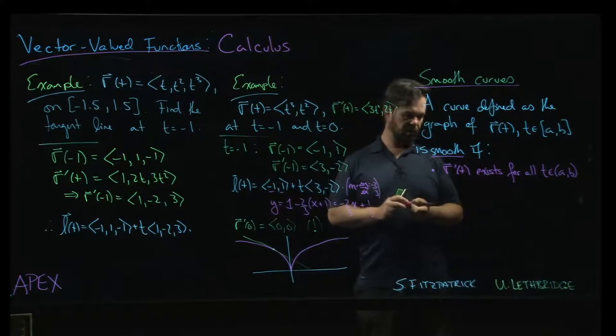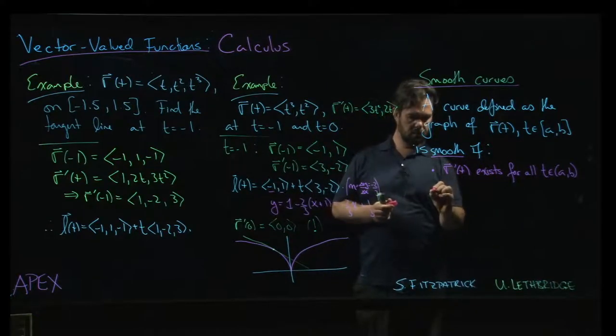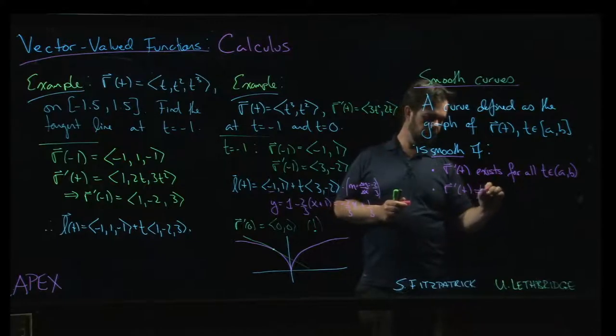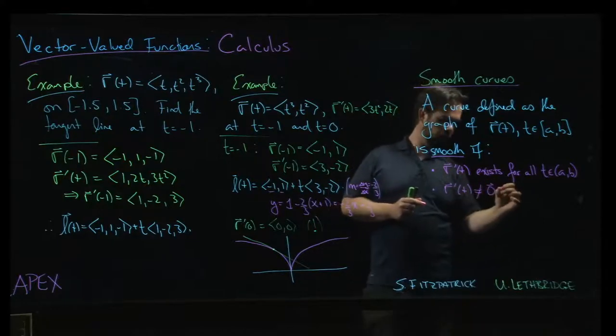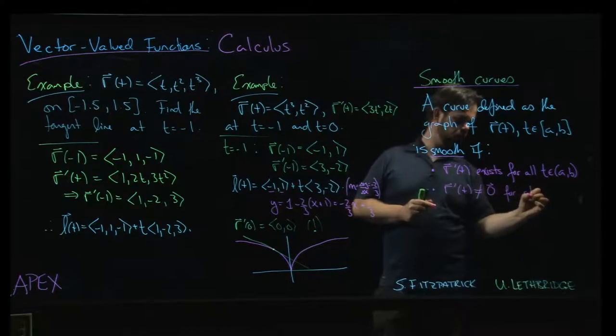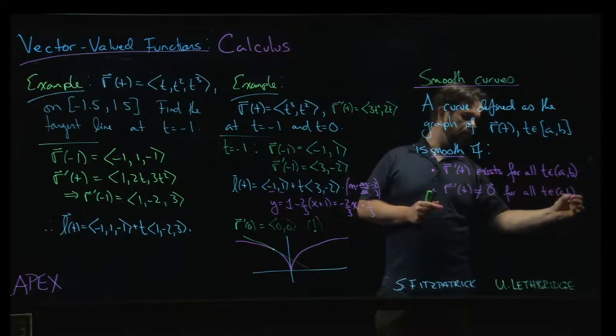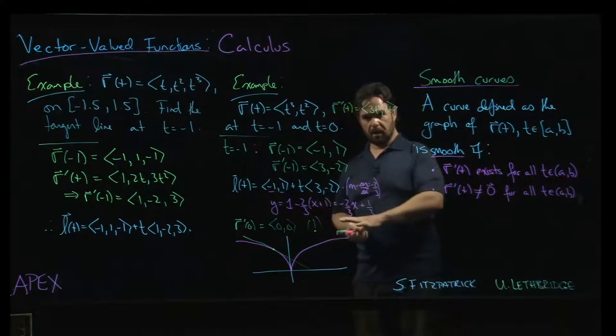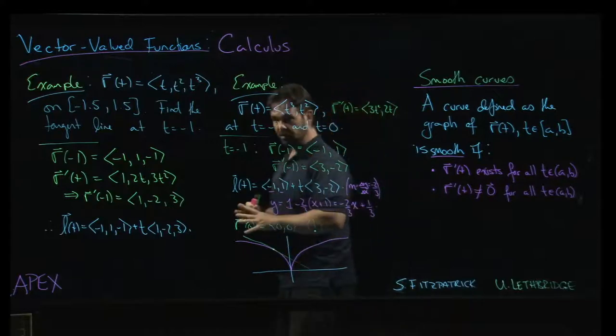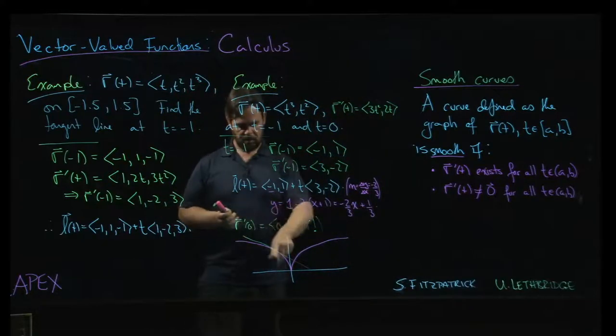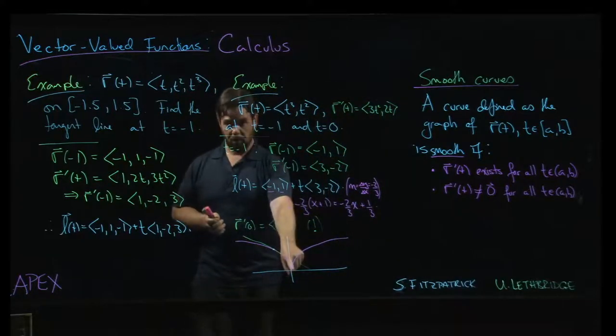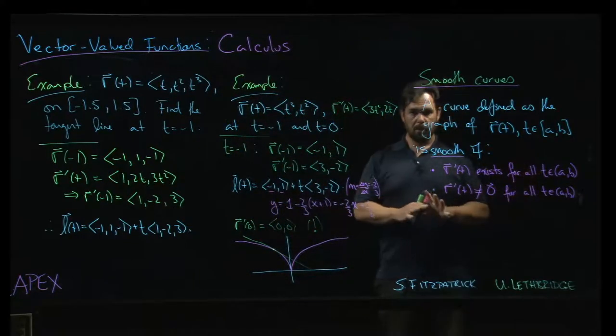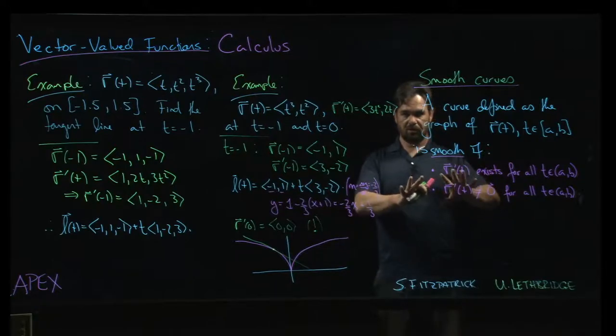So the derivative needs to exist, and also we need that derivative to be non-zero for all t. So the derivative has to exist and be non-zero, and we saw in the previous example why you don't want the derivative to be zero. You get yourself into some trouble. That is certainly not a point where we would say that the curve is smooth. And there's a few ways that you can think about this condition and why it should guarantee smoothness.